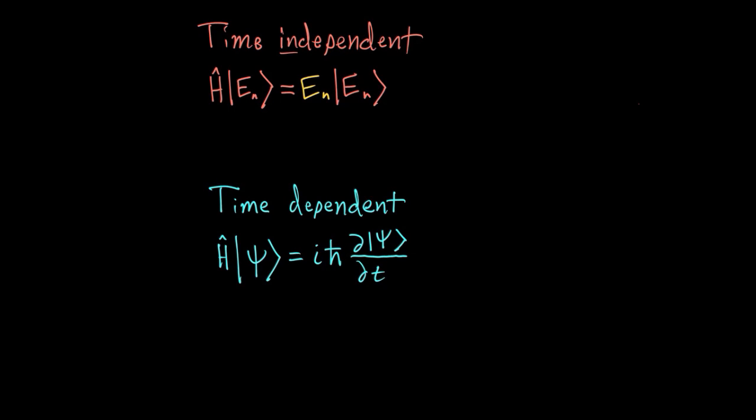So when I was first learning quantum mechanics, I found myself being really confused about the difference between the time-independent Schrödinger equation and the time-dependent Schrödinger equation. I thought that they were the same equation, and that if I just took this equation and somehow got rid of this time here,